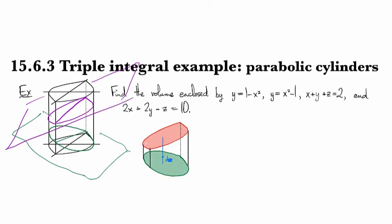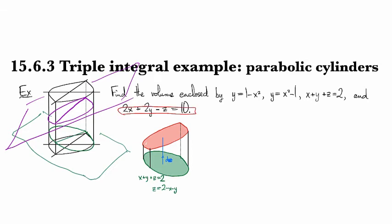Okay, so the bottom one, this is given by the plane x plus y plus z equals two, and since we're doing dz, I solve it for z, so it becomes two minus x minus y. And then the upper plane is given by this one right here, so I solve this one for z, and I see z is equal to two x plus two y minus ten.